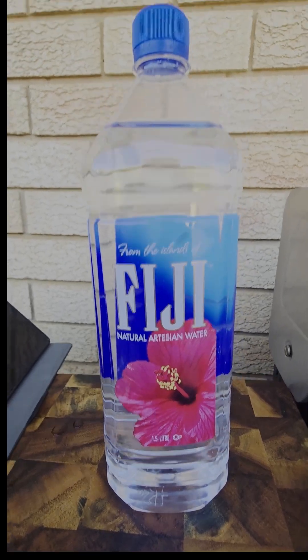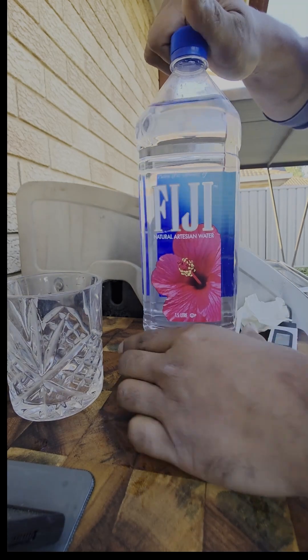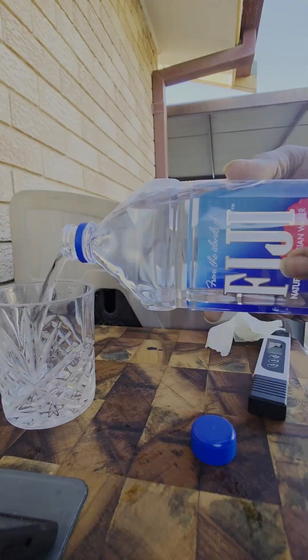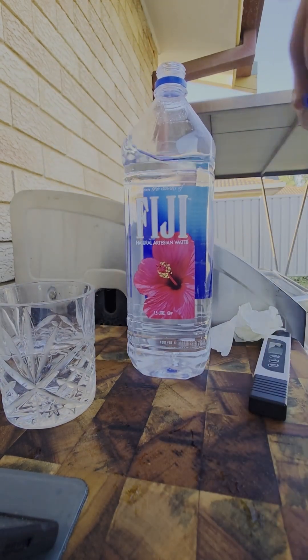Have you ever wondered how safe is the bottled drinking water available in Australian supermarkets? Well, to determine this, one of the parameters is TDS reading. It is recommended that the safe TDS value range is from 50 to 500 ppm.